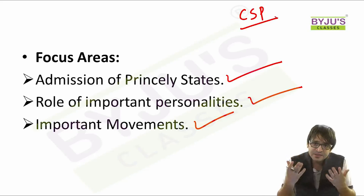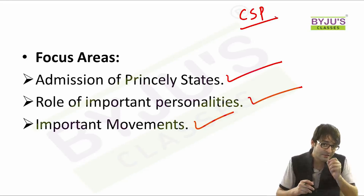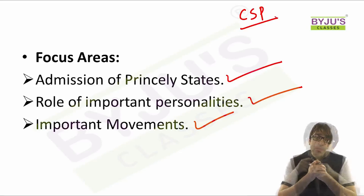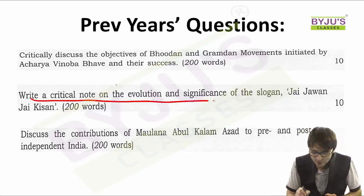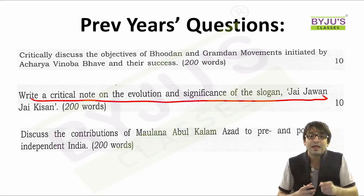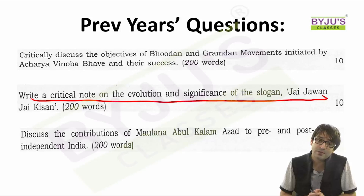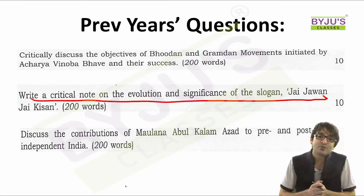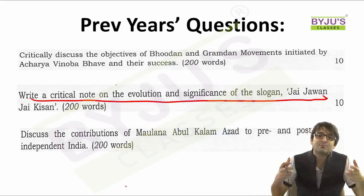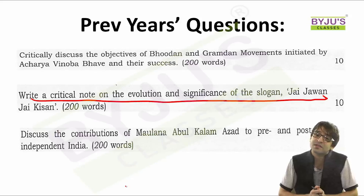In India after independence, you might also be asked about Indira Gandhi's slogan of 'Garibi Hatao' and its significance, or a critical note on the evolution and significance of 'Jai Jawan, Jai Kisan' by Lal Bahadur Shastri. In this year's mains, you might also be asked about the role, significance, and leadership qualities of Sardar Vallabhai Patel, because his Statue of Unity is in the news, and the Congress party is accusing the BJP of appropriating his legacy. His role in integrating various princely states into the Indian Union becomes important.